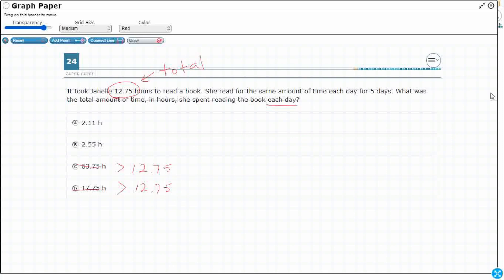Because my total, how long it took her to read the book, is 12 and 75 hundredths hours. So she read the same amount of time each day. The same amount of time each day. There we go. Equal groups.